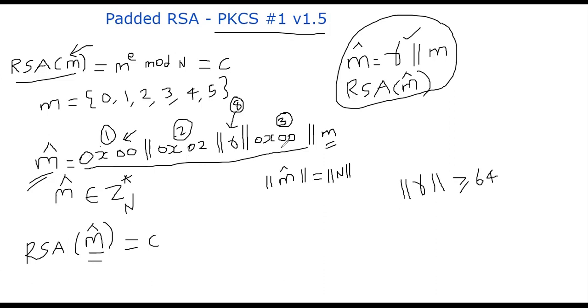It throws away everything. Everything that is from the beginning all the way into the last 0x00 is thrown away. And then the m is recovered. This is how the decryption works.